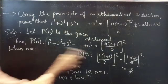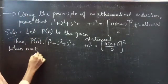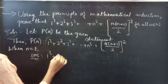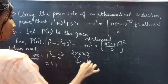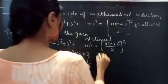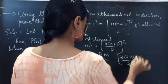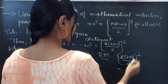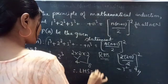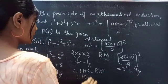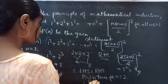Let's also check for n equals 2. When n equals 2, from LHS we take the first two terms: 1³ + 2³ = 1 + 8 = 9. Coming to RHS, substitute n equals 2: 2 × (2+1)/2 whole squared — the 2 cancels — giving 3² = 9. So LHS equals RHS, which means P(n) is true for n equals 2. Therefore P(2) is true.